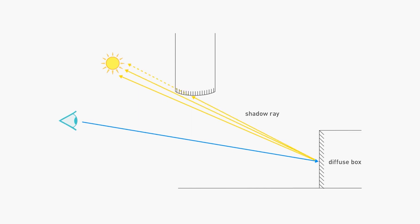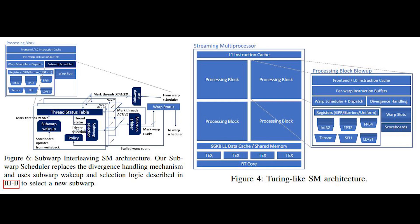If we take a look at the paper and look at figure 4 versus figure 6, you can see what the researchers have essentially done — adding the sub-warp scheduler in its place. It describes a sub-warp interleaving SM structure where a sub-warp scheduler replaces the divergence handling mechanism and uses sub-warp wake-up and selection logic to select a new sub-warp.